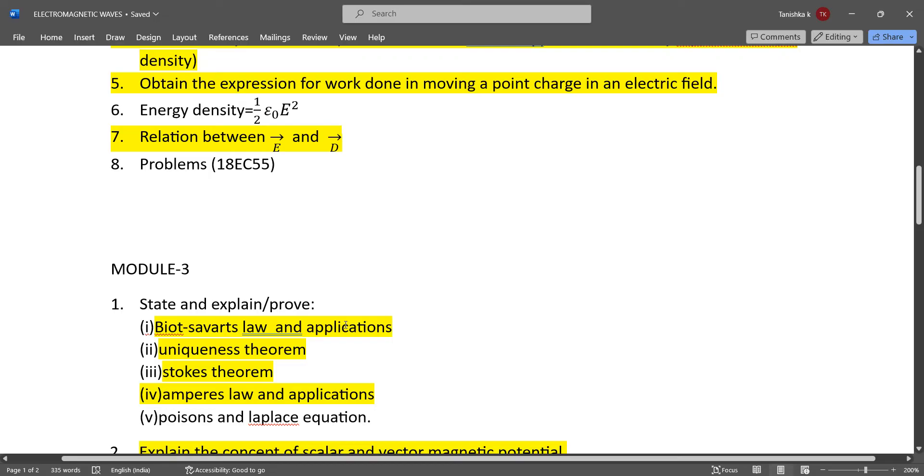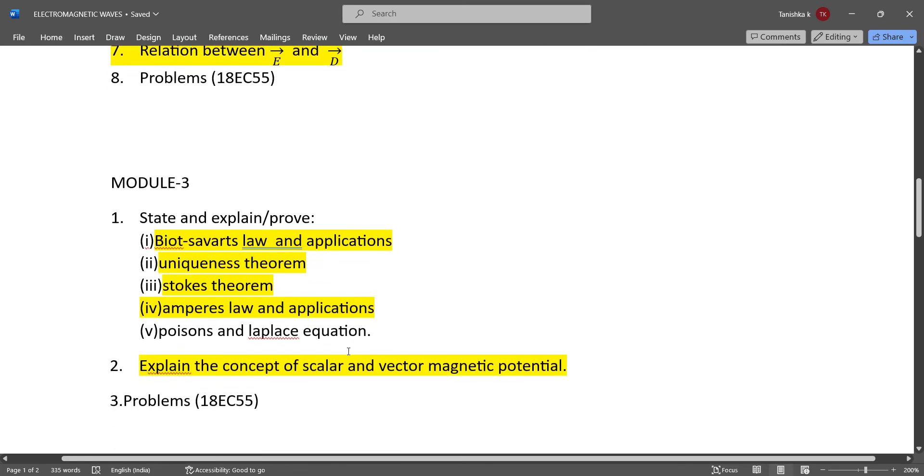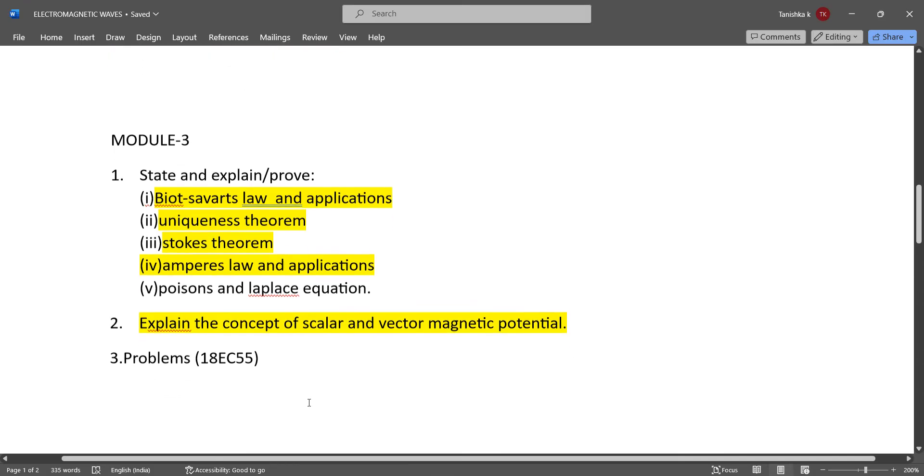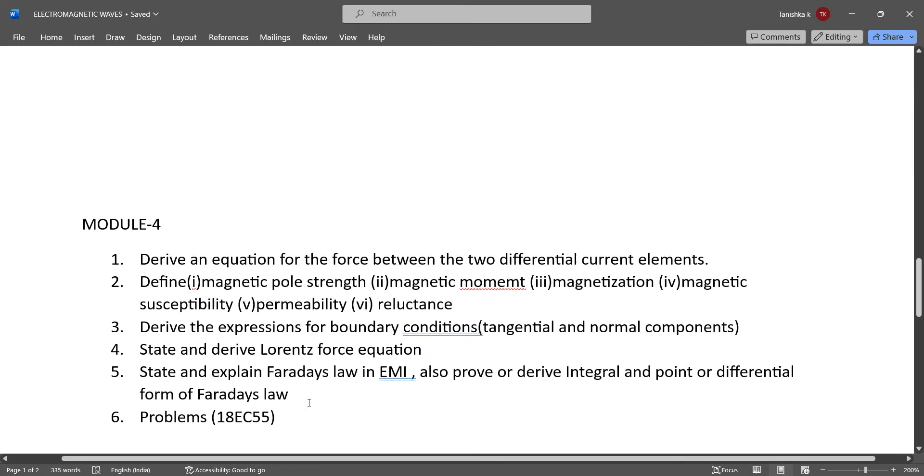Module 3 important questions: Biot-Savart's law and its applications, uniqueness theorem, Stokes theorem, and Ampere's law and its applications. Explain the concept of scalar and vector magnetic potential. Also refer to model paper for problems.